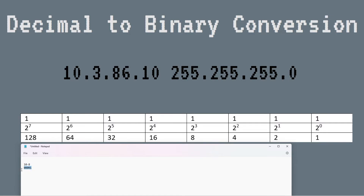How about 10 minus 8? Yes! So 10 minus 8 equals 2 — now I'm working with the number 2. Can I do 2 minus 4 and get a positive number? No — another zero. How about 2 minus 2? Yes — that's a one. And since we're zeroed out, that last bit is a zero.